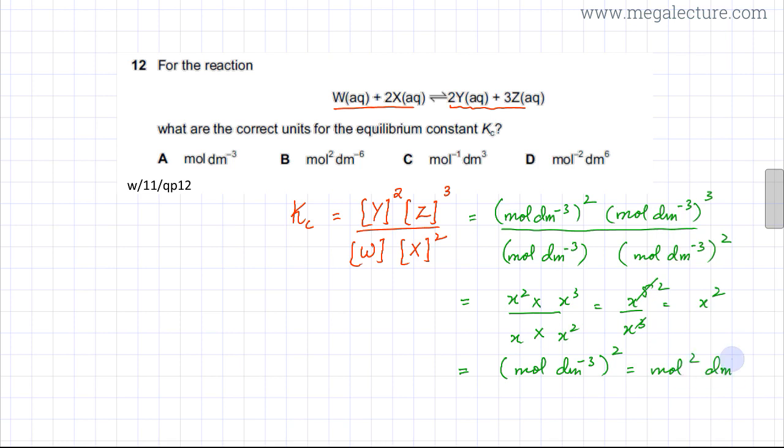According to this, mol² dm⁻⁶, the correct option is option B, which is your correct answer.